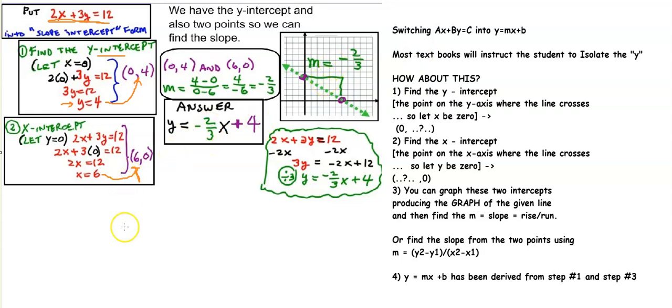X-intercept. To get the x-intercept, we let y be 0. Back in the original equation, we let y equals 0. We get 2x equals 12, that's x equals 6. If x equals 6, that's also an ordered pair, 6 comma 0. So now we have two ordered pairs.